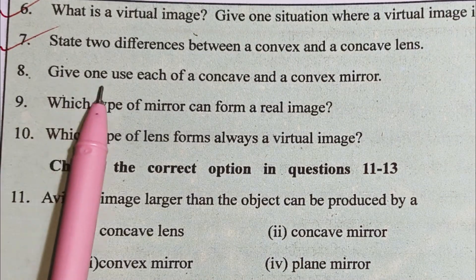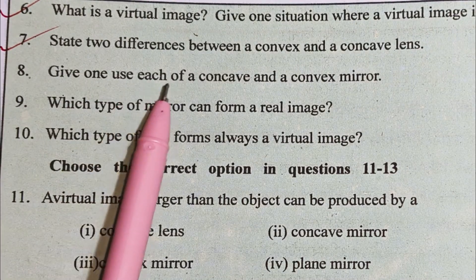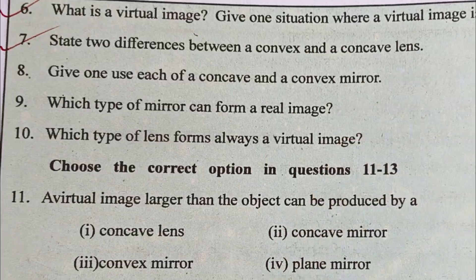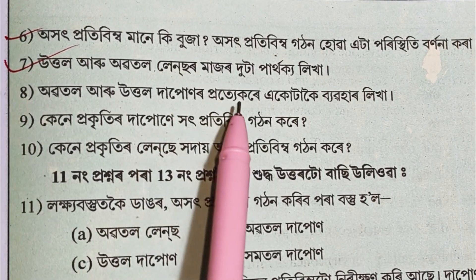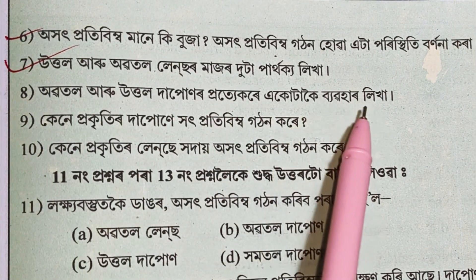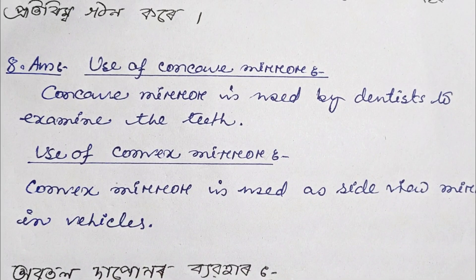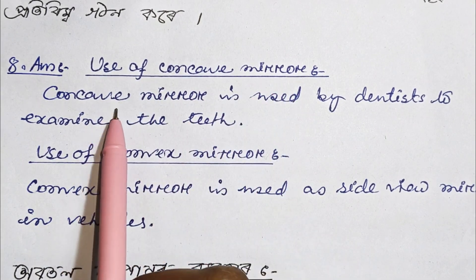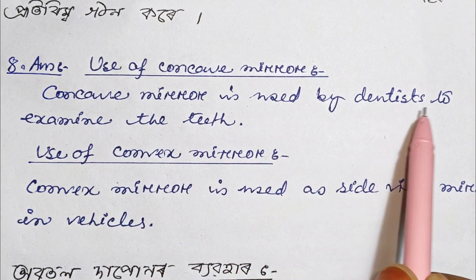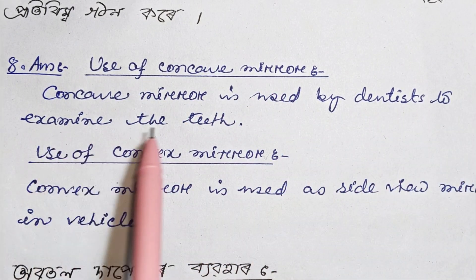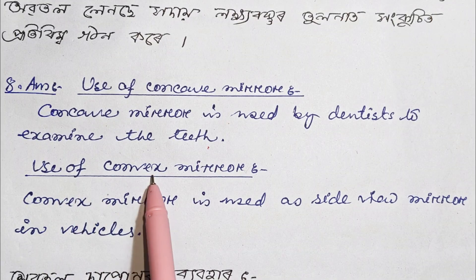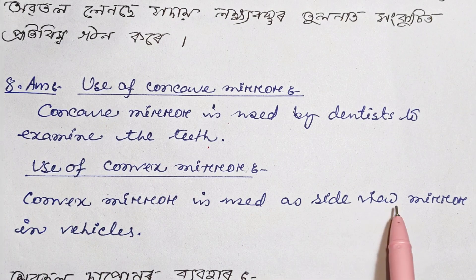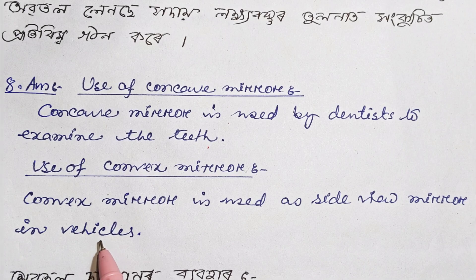Number 8: Give one use each of a concave and a convex mirror. Use of concave mirror: A concave mirror is used by dentists to examine teeth. Use of convex mirror: A convex mirror is used as a side-view mirror in vehicles.